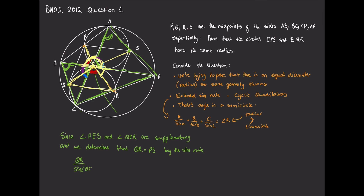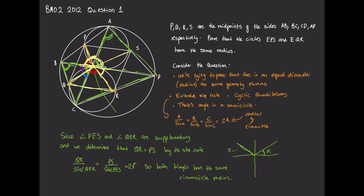Now let's write this up in a clean proof. Since angles PES and QER are supplementary — proved via the colored angle argument — and by the mid-segment theorem QR = PS, by the extended sine rule: QR/sin(QER) = PS/sin(PES) = 2r, which means both circles EPS and EQR have the same radius. We can add a note: supplementary angles have equal sines because sin(x) = sin(π - x), as seen from a CAST diagram. So our solution is correct and both circles have the same radius.